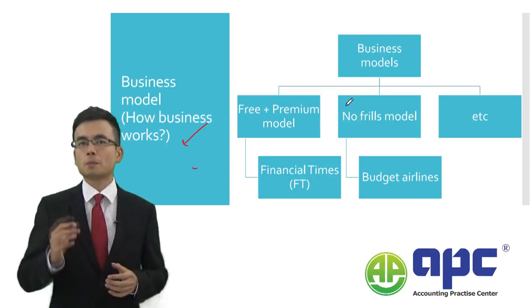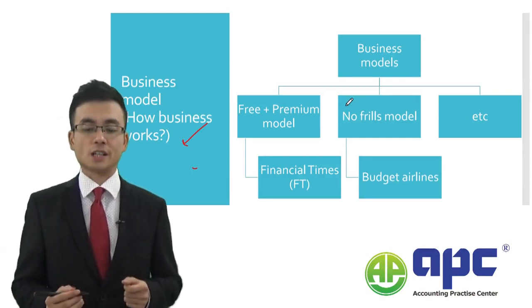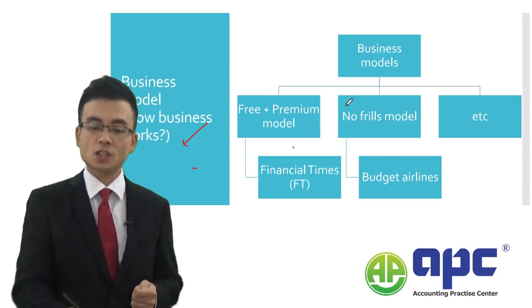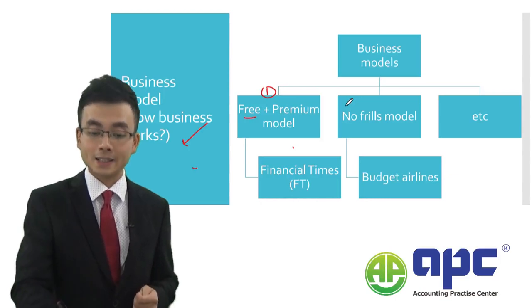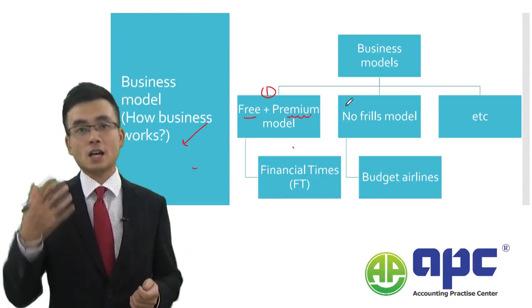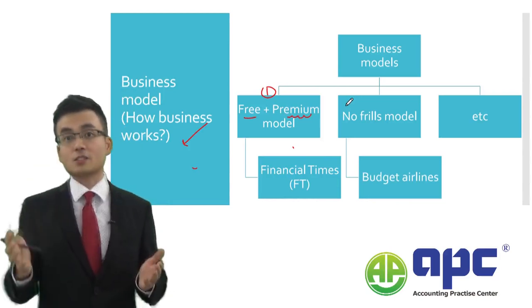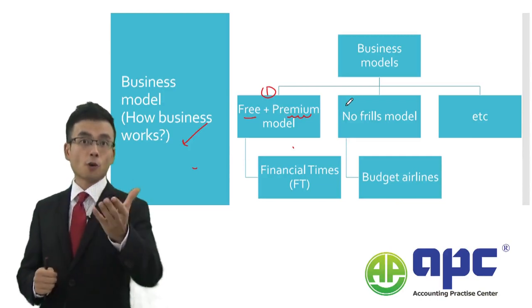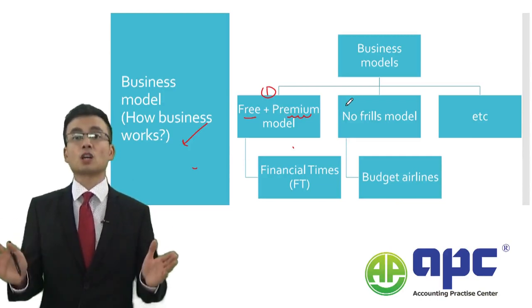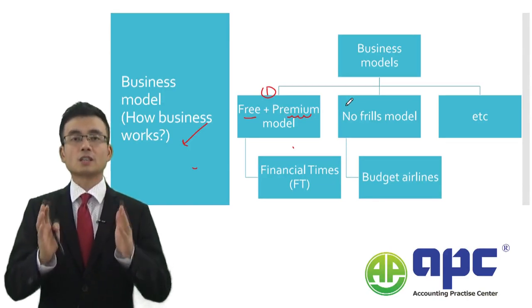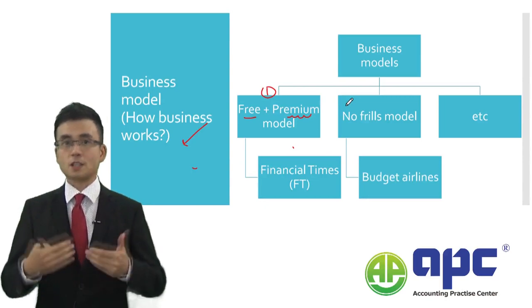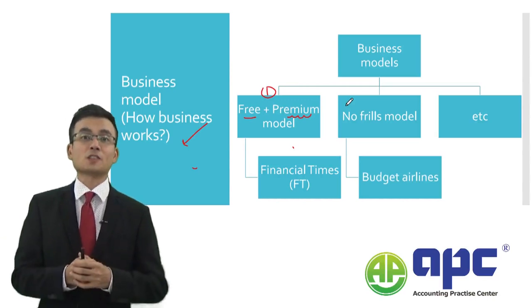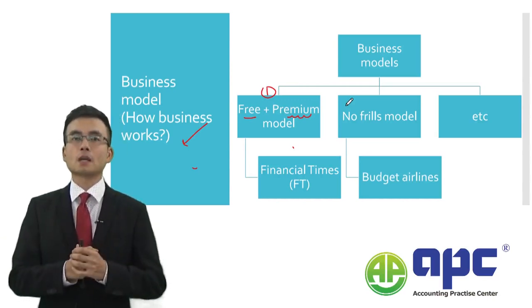I'd like to pick up two particularly interesting business models used by businesses. The first business model is to provide a free-of-charge service, and then if you enjoy that free service, charge you money. That's exactly how it works here for APC, the company that I own — for example, you're watching this video free of charge, but if you're interested in my course materials, you may decide to study for ACCA courses with me and I'm going to charge you money if you enroll.